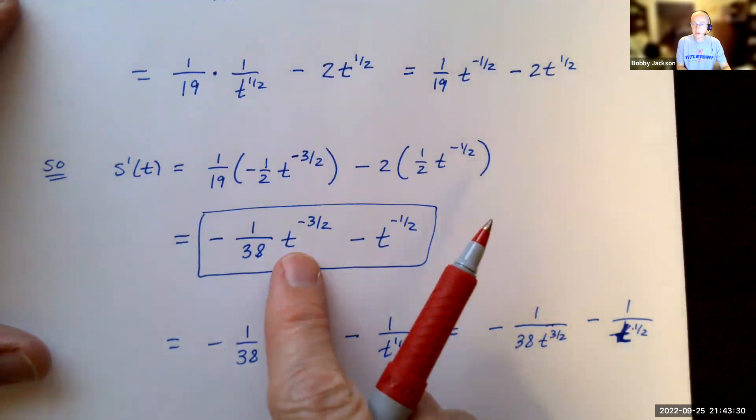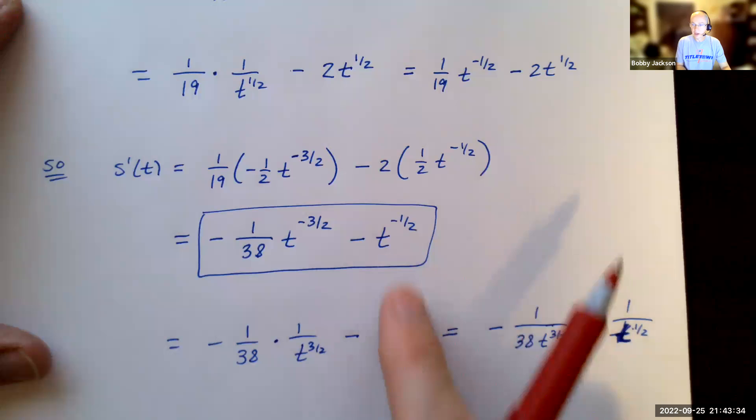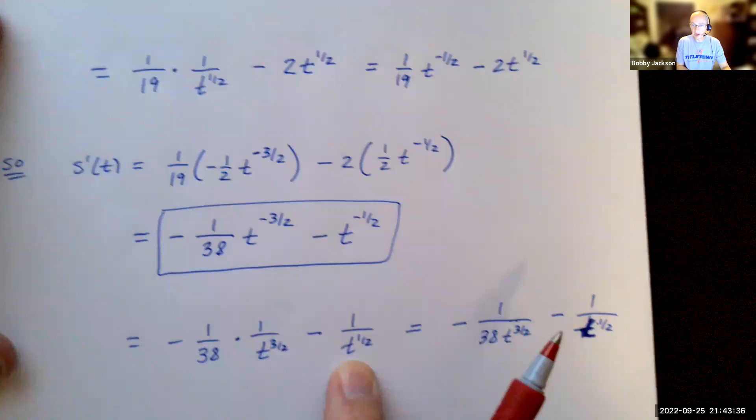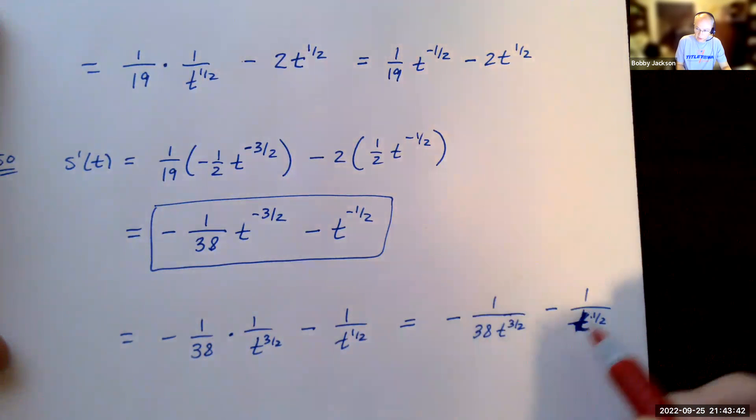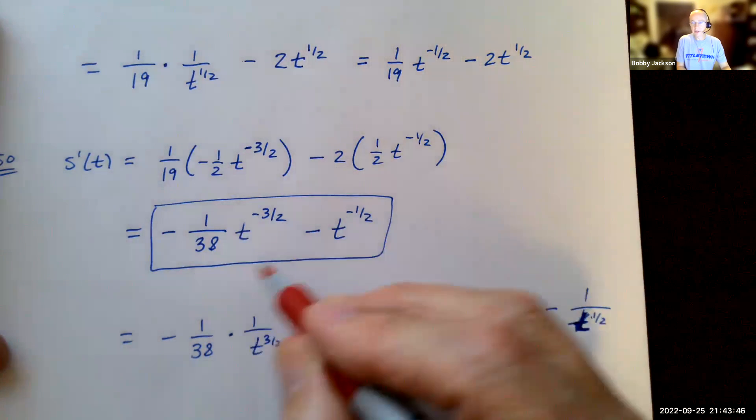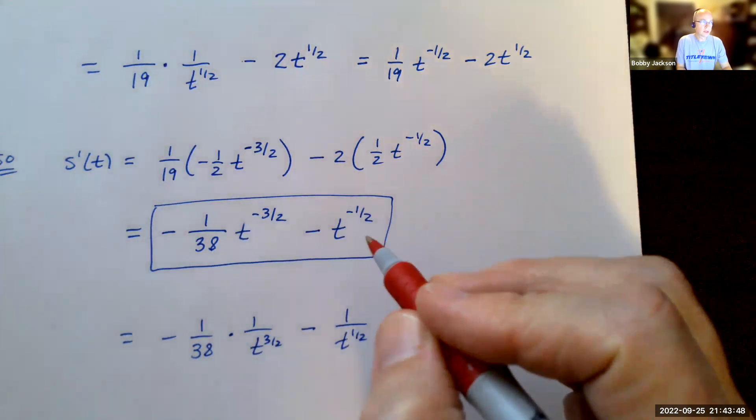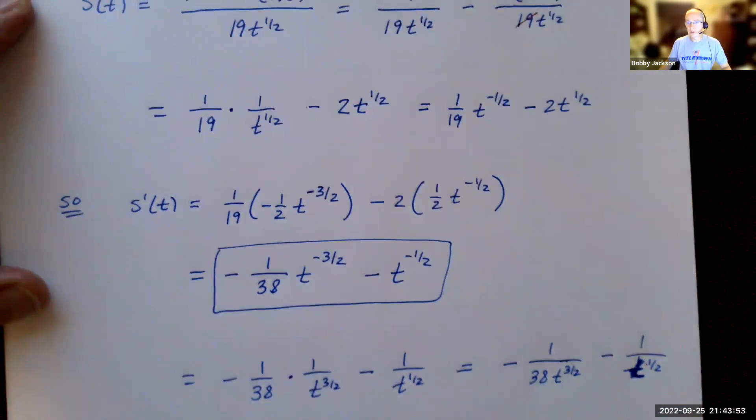You would rewrite t to the negative 3/2 as 1 over t to the 3/2. t to the negative 1/2 is 1 divided by t to the 1/2. You can multiply this together to get this minus 1 over t to the 1/2. So this will be an answer that sometimes I will ask for. But I think this in the box is going to be fine for what Achieve wants you to give. Okay, so I hope this helps with this one.